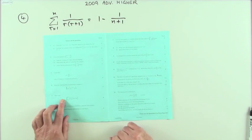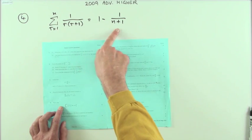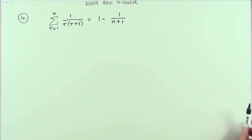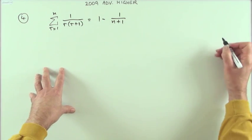Number four from the 2009 Advanced Higher: proof by induction for a summation formula involving fractions. Five marks. To prove the truth of this statement for all n in the natural numbers, positive integers.